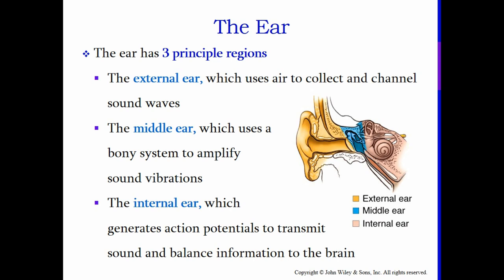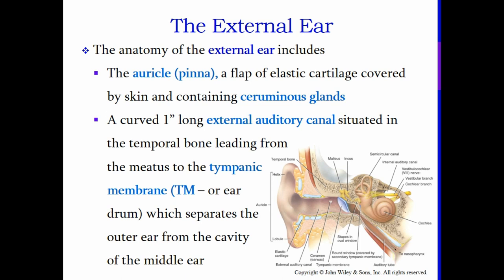The ear has three principal regions. The external ear collects and channels sound waves into the middle ear, which uses a bony system to amplify sound vibrations — you have three very small bones in your middle ear. Then you have the internal ear, which generates action potentials to transmit sound and balance information to the brain. The anatomy of the external ear includes the auricle or pinna — that flap of skin and cartilage on the outside of the head.